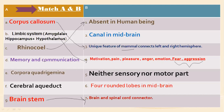Memory and communication are located in the association areas of the brain — these are neither sensory nor motor parts. When you remember something, that is the association area working. The corpora quadrigemina — 'quadri' meaning four — consists of four rounded lobes in the midbrain. The cerebral aqueduct, or aqueduct of Sylvius, is the canal in the midbrain connecting the third and fourth ventricles.